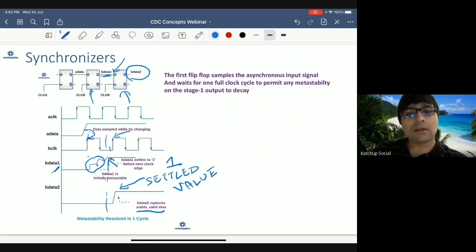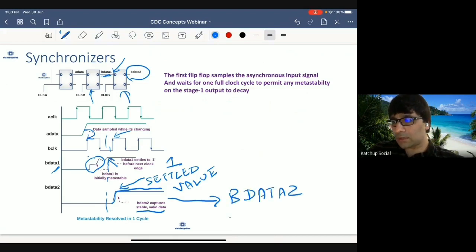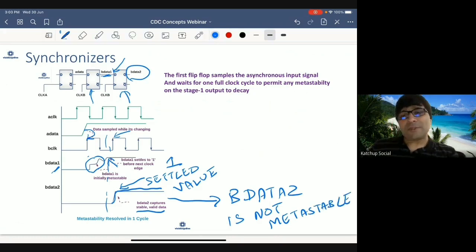Now B data 2, because of that, because the value is already settled, it is meeting setup and hold time, is not metastable. So B data 2 is not metastable. So now you must be thinking that I said you can neutralize the metastability, you cannot completely avoid it. But here in this particular case, it is being avoided. So what do we mean by you are just neutralizing the metastability? Let us see another case.